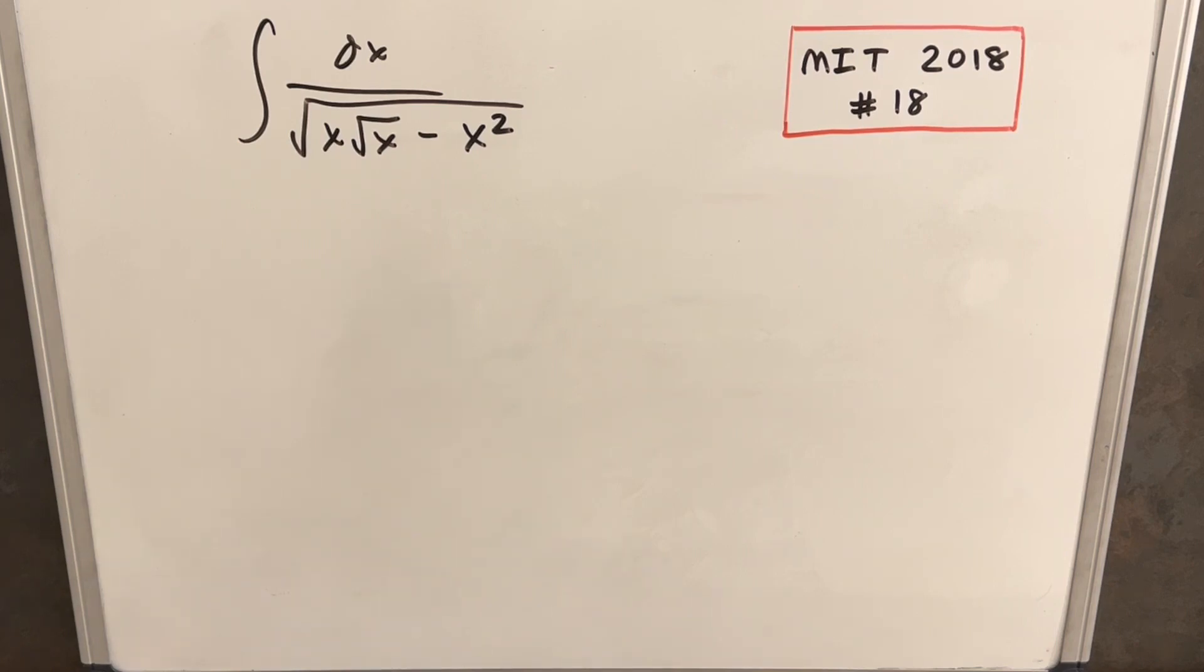Another problem here from MIT Integration Bee 2018. This is number 18. We have the integral of dx over the square root of x times the square root of x minus x squared.